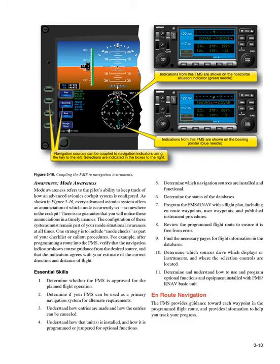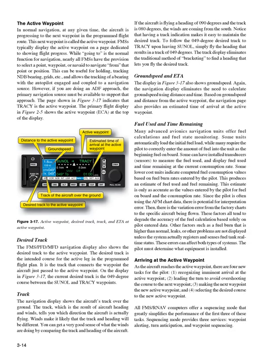On-route navigation. The FMS provides guidance toward each waypoint in the programmed flight route, and provides information to help you track your progress. The active waypoint: in normal navigation, at any given time, the aircraft is progressing to the next waypoint in the programmed flight route. This next waypoint is called the active waypoint. FMSs typically display the active waypoint on a page dedicated to showing flight progress. Nearly all FMSs have the provision to select a point or navaid to navigate from that point or position, which can be useful for holding, tracking NDB bearings, grids, etc., and allows the tracking of a bearing with the autopilot engaged and coupled to a navigation source.